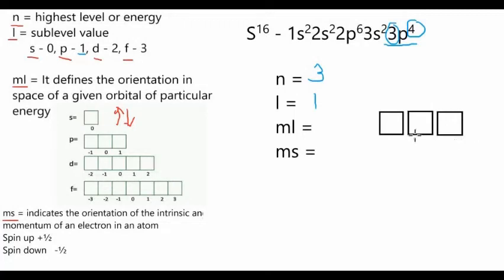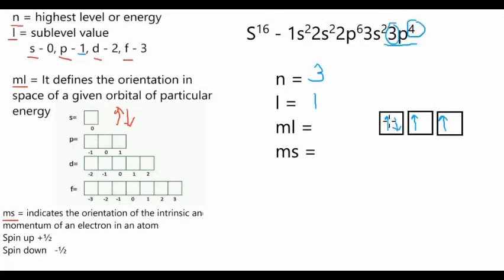Hund's rule states that every orbital is singly occupied by one electron before any orbital is doubly occupied. So we fill each box with one electron first before going back to the first box. With 4 electrons, we place one in each of the three boxes first — arrow up, arrow up, arrow up — then the fourth electron goes into the first box as arrow down. This is the orbital diagram for 3p4.